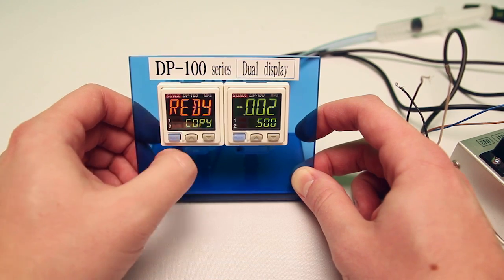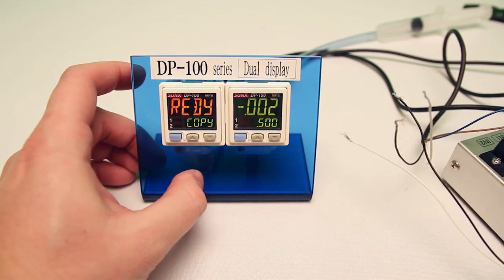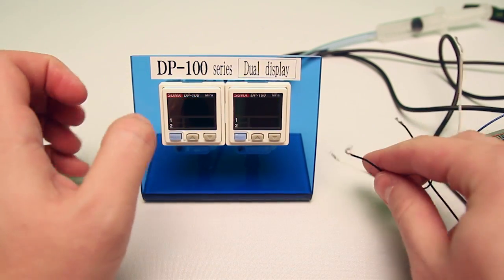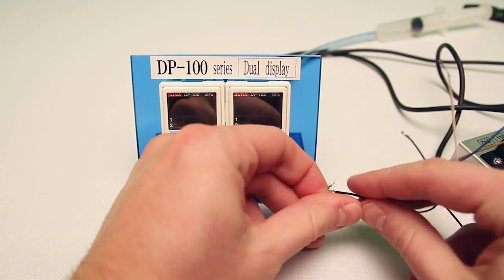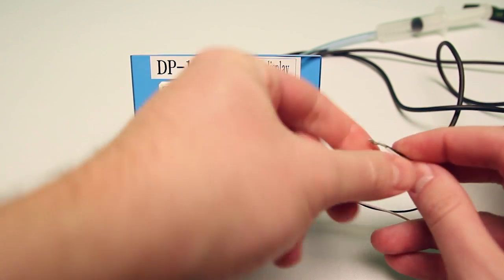When I hit mode, it goes back to ready. It's now ready to copy from this sensor to the other one. I'm going to cut my power and cross my output wires, black to white and black to white.